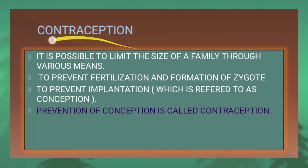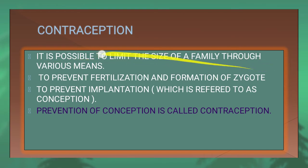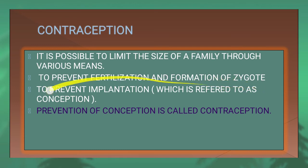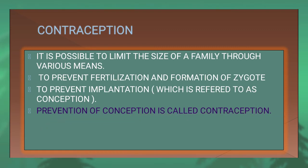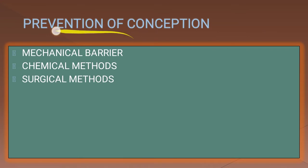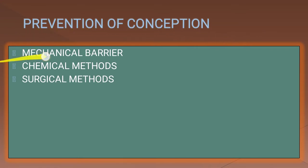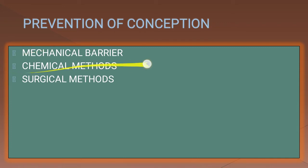It is extremely important to have a small family. It is possible to limit the size of a family through various means: to prevent fertilization and formation of a zygote, or to prevent implantation, which is also known as conception. Prevention of conception is called contraception. Different methods are: mechanical barrier, chemical method, and surgical method.